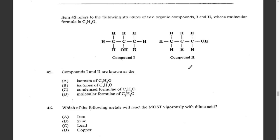Item forty-five refers to two organic compounds I and II whose molecular formula is C₃H₈O. Question forty-five: compounds I and II are known as isomers of C₃H₈O — they have the same molecular formula but different structural arrangements.